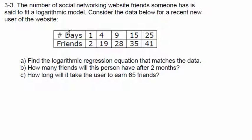When you join Facebook or Twitter, in the first few days you get lots of friends. But as the days go on, you're still getting more friends, but they start to tail off. Notice in these five days you picked up nine friends, but in these ten days you only picked up six. Your number of friends starts to tail off — you don't end up with an infinite number of friends. So let's find the logarithmic regression.